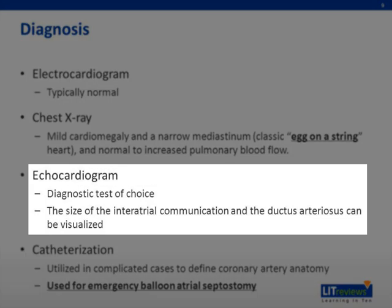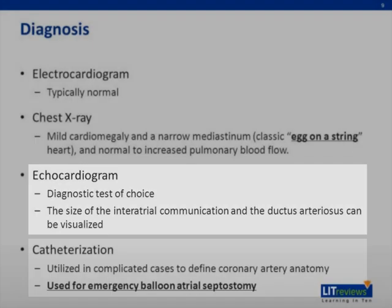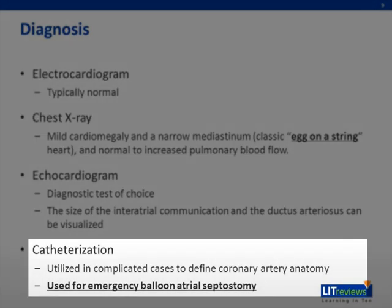The transthoracic echocardiogram is the diagnostic test of choice. Not only can the anatomy be confirmed, but the size of the interatrial communication and the ductus arteriosus can be visualized, providing both anatomic and physiologic information. Cardiac catheterization is typically not used for diagnostic purposes unless needed to define coronary artery anatomy prior to surgery. However, this modality is absolutely essential for emergency balloon atrial septostomy, which will be discussed in more detail shortly.